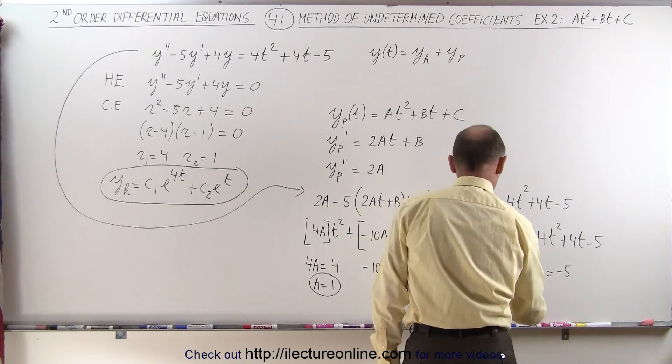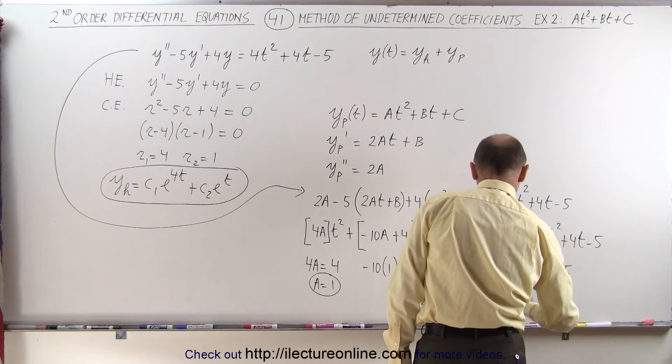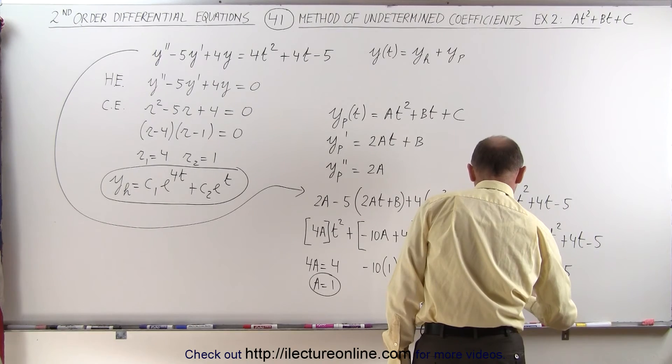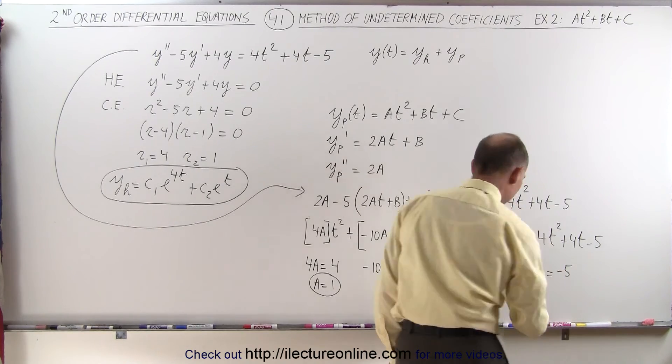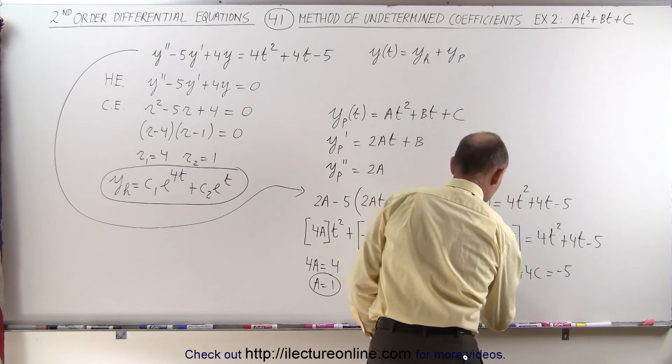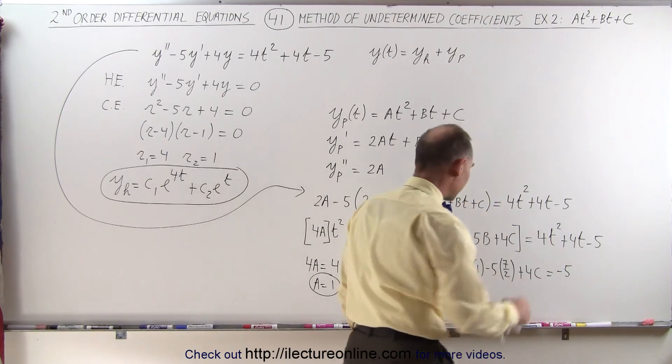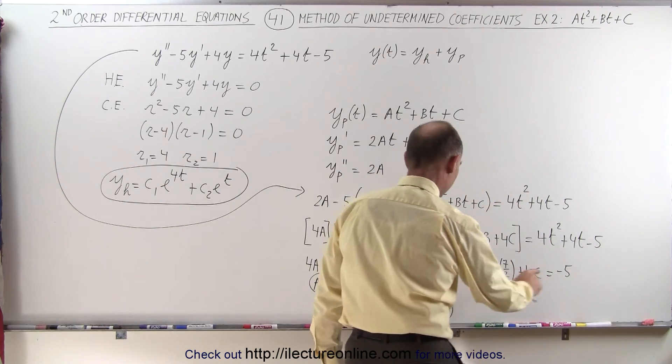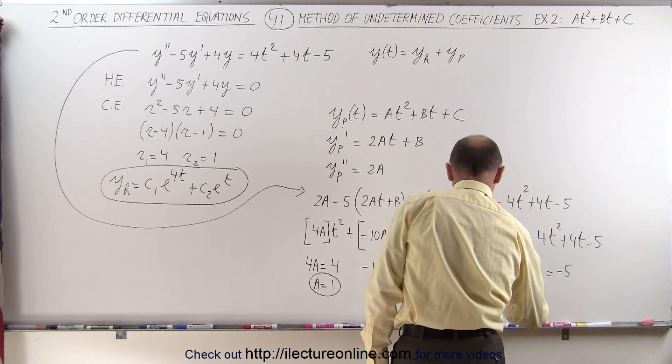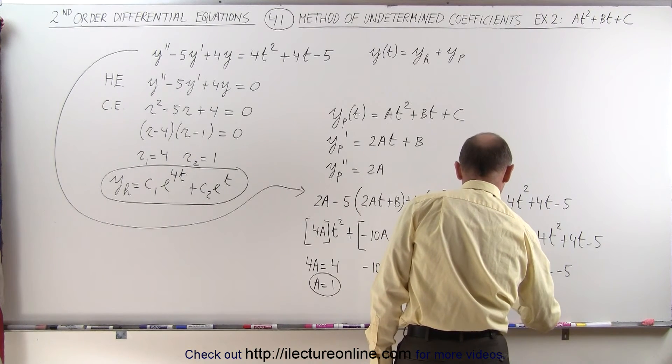All right, we can move the 2 to the other side and multiply this through. So we get minus 35 over 2. Matter of fact, it's probably better to get rid of the fraction by multiplying everything by 2. So let's do that.